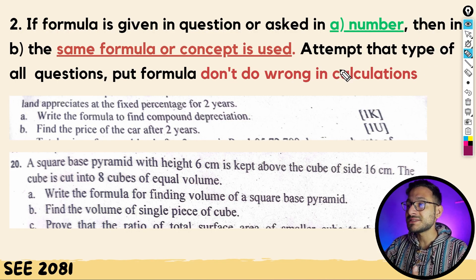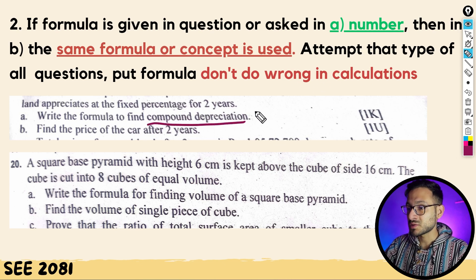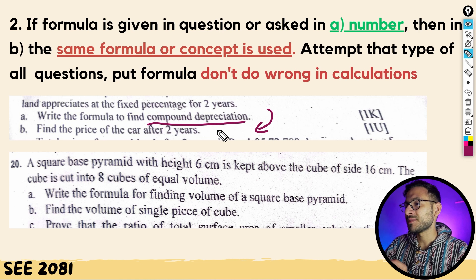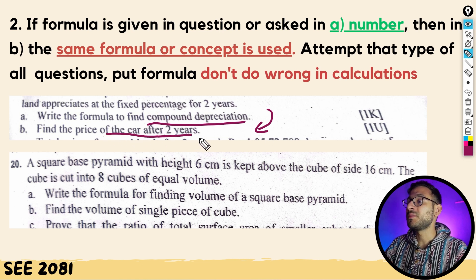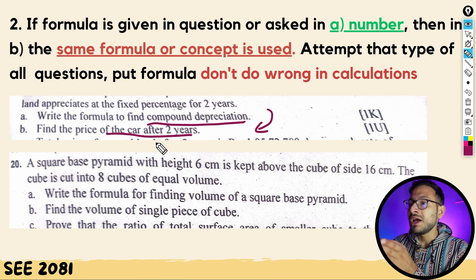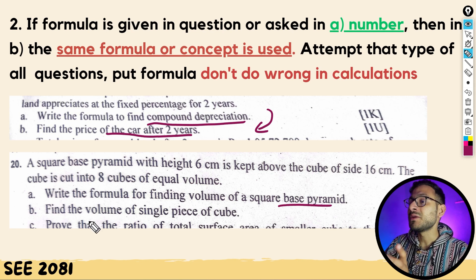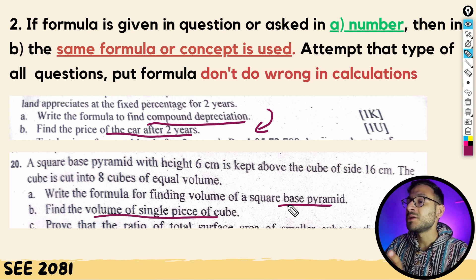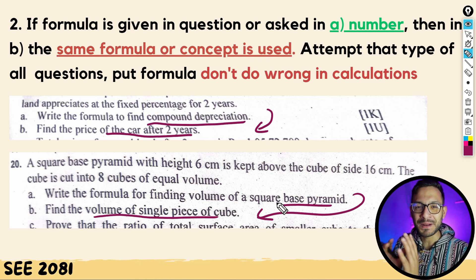The second point is about understanding level questions. If there's a knowledge level question asking for the formula for compound depreciation, the understanding level question will ask you to find compound depreciation and final price. Another example: if you get the volume of square-based pyramid formula at knowledge level, the understanding level question will ask you to find the volume of a specific pyramid.